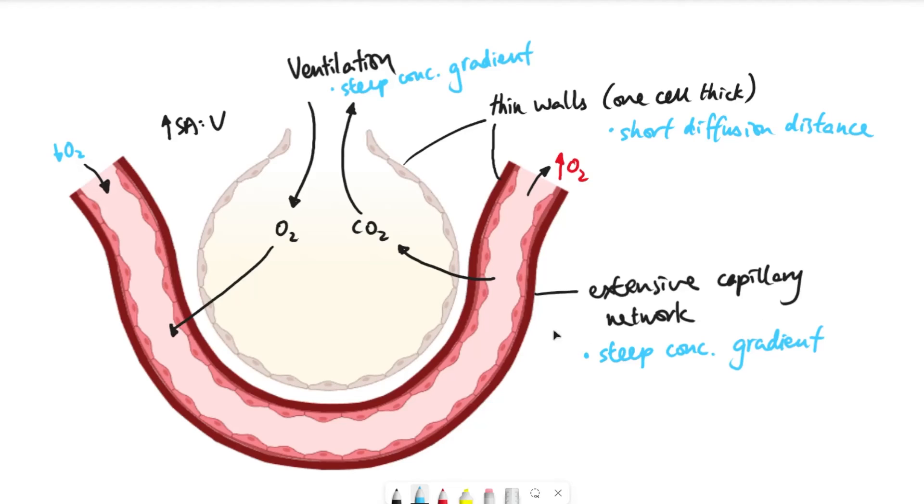The ventilation is about maintaining steep concentration gradient inside the alveoli and outside of it. Whereas the extensive capillary network with lots and lots of capillaries is about maintaining that steep concentration gradient between the bloodstream and the alveoli. So even though the explanation for these two adaptations are the same, they actually talk about the gradient between two different places.